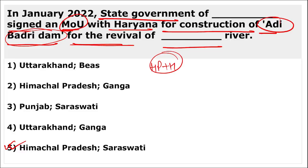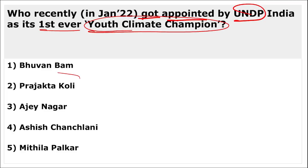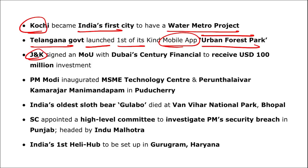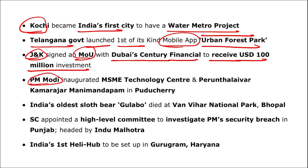Prajakta Koli — known as 'Mostly Sane' on YouTube — was appointed by UNDP as India's first ever Youth Climate Champion. Kochi became India's first city to have a water metro project. The Telangana government launched a first-of-its-kind mobile app for Urban Forest Parks. Jammu and Kashmir signed an MoU with Dubai's Century Financial to receive a $100 million investment.